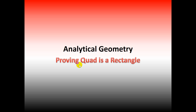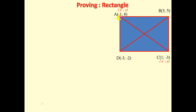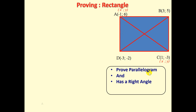In this video, we're going to look at how to prove a quadrilateral is a rectangle. We have a four-sided figure ABCD with coordinates. For us to prove that this figure is a rectangle, we need to do two things: firstly, we need to prove that it is a parallelogram, and secondly, we need to prove that it has a right angle.